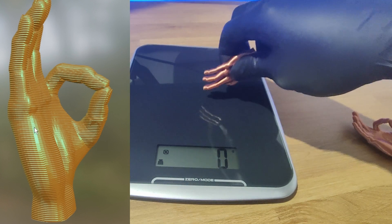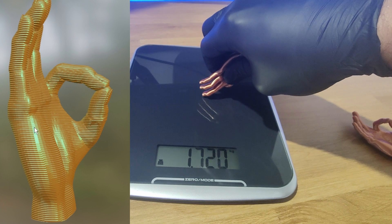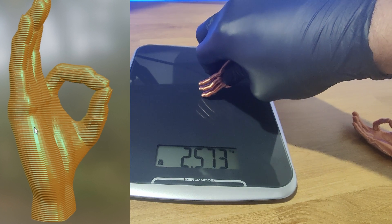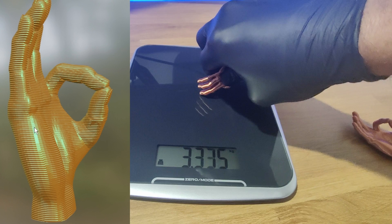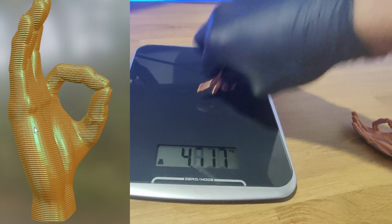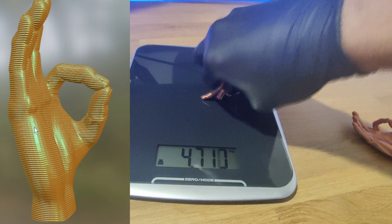Now to start us off, we have the hand that I printed vertically, so this should be the weakest model, but I think it held out to about 4.7, which was okay.